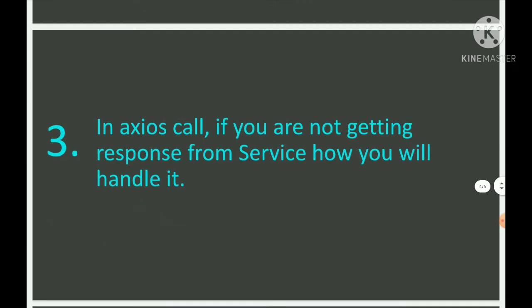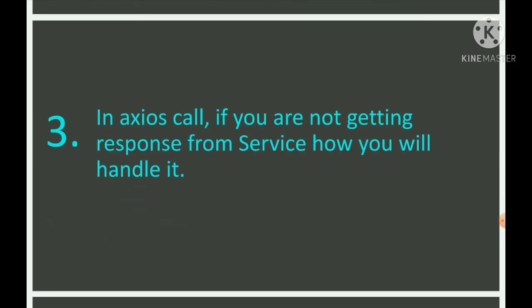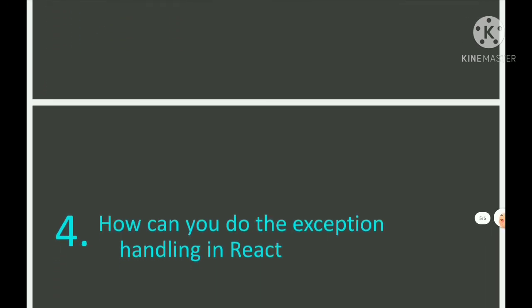The next question is Axios-related. Generally in any website you pull data from a database, develop a service API, and call it using Axios or fetch. Suppose the service is not responding immediately or is throwing an exception — how do you handle that situation? Axios has certain parameters in its get and fetch methods, and based on those parameters, how can you handle that? That is the question.